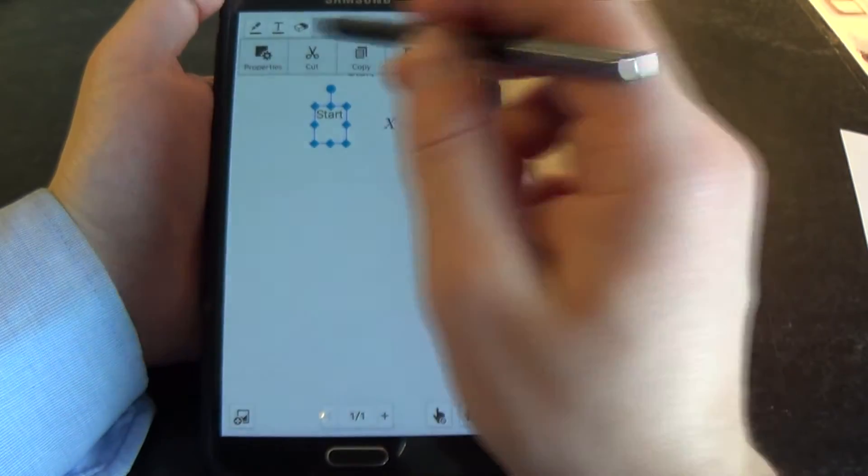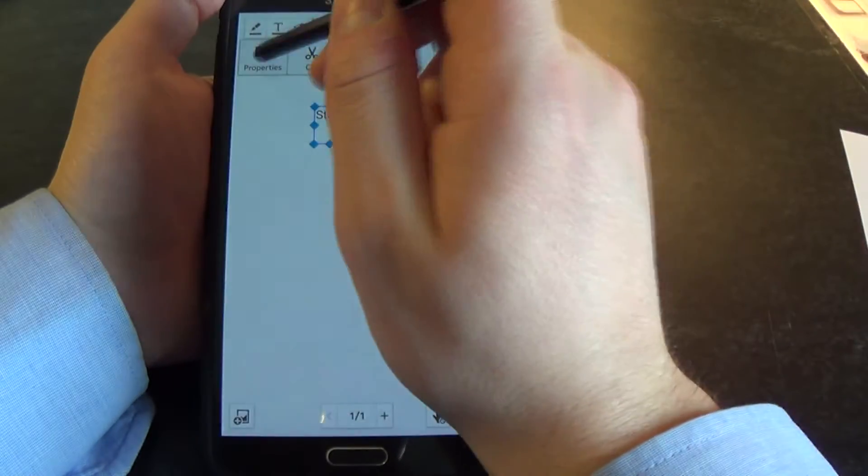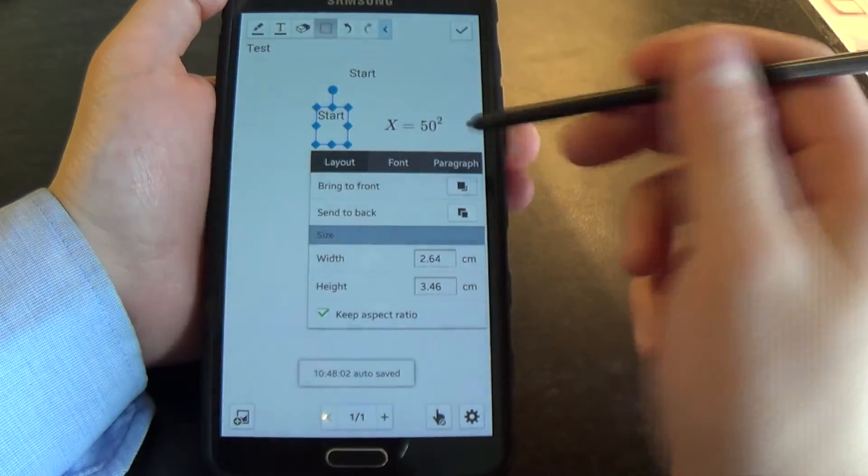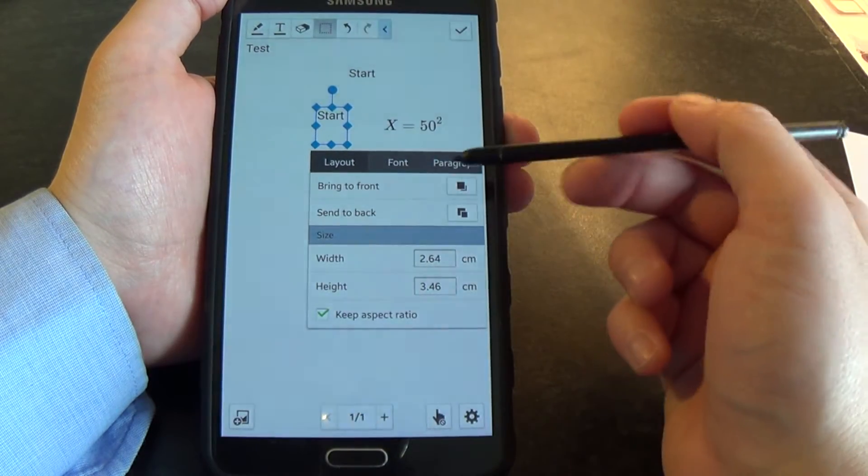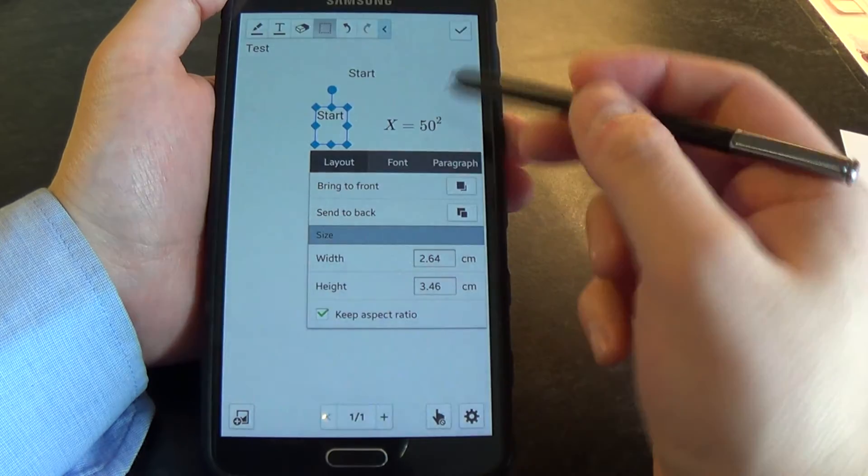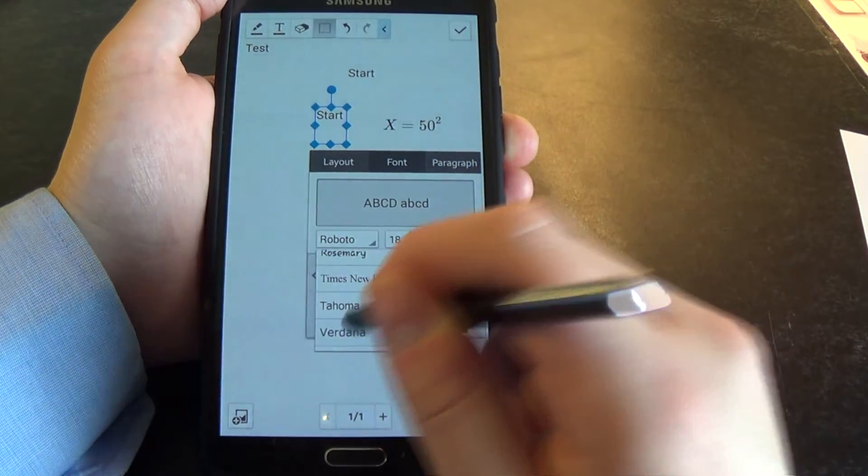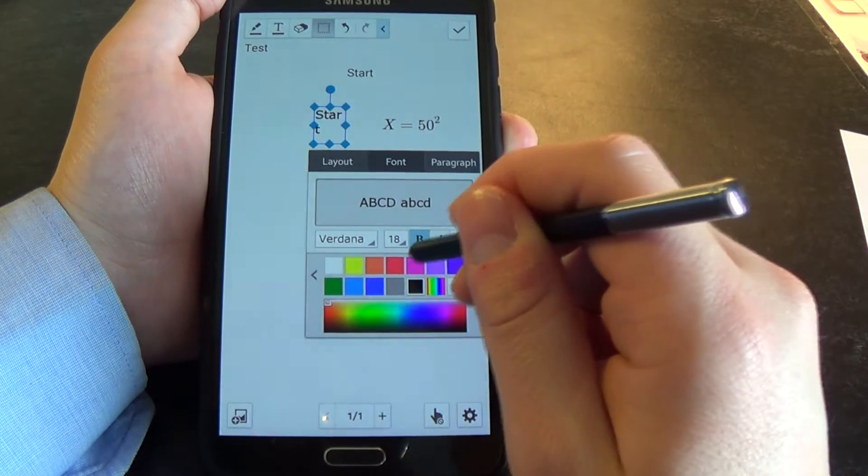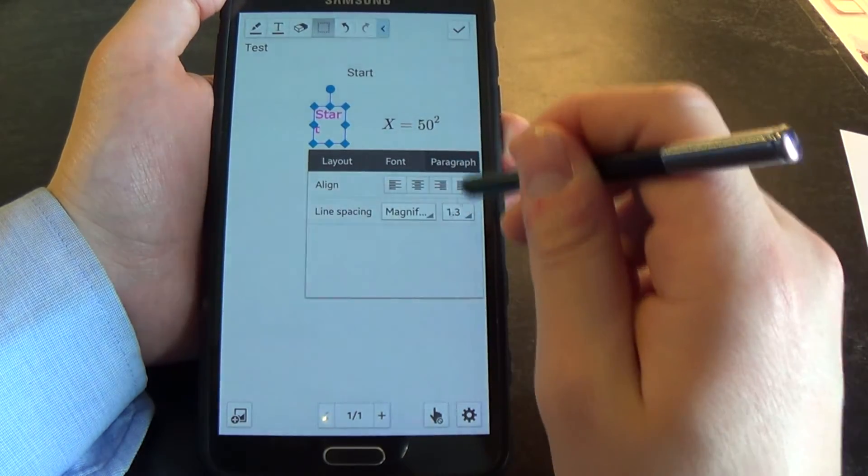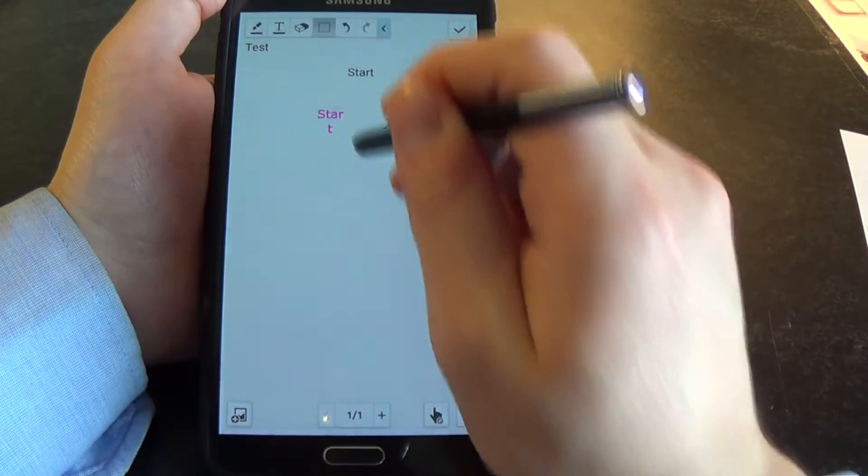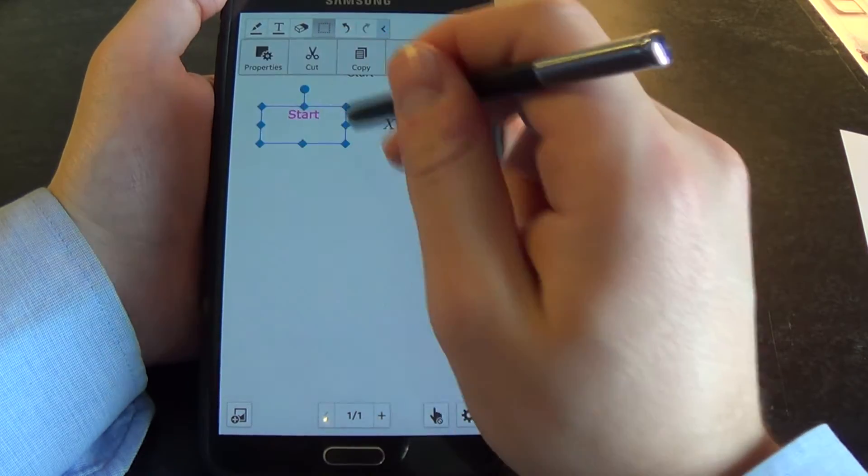If I select an object, I can get the properties on it. So if I go into properties, I can adjust the layout, size, width, send to back, bring to front, and adjust the font, colors, align it. So it's a pretty handy little tool.